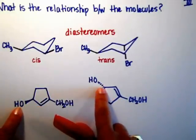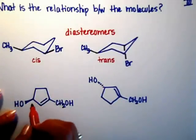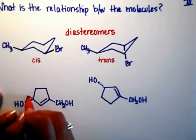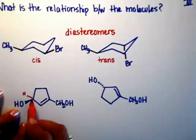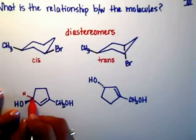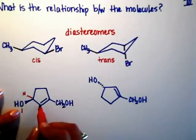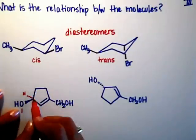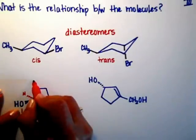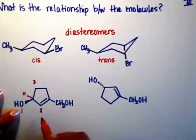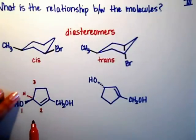Now we need the chiral center. So really quickly go ahead and assign priorities. This one on the left has the hydrogen in the back. So I have oxygen, carbon, carbon. Oxygen gets priority one. Double bonded carbon versus single bonded carbon — double bond gets two, single bonded carbon gets three. And I'm done. Number four is in the back.